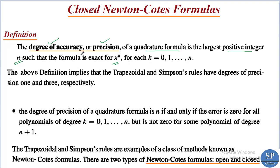That means the precision or degree of accuracy of a quadrature formula — we have already discussed some formulas, that is the trapezoidal rule and Simpson's rule. So for those, the degree of accuracy or precision is the largest positive integer n such that the formula is exact for x^k, that is exact for x^0, x^1, etc. up to x^n.